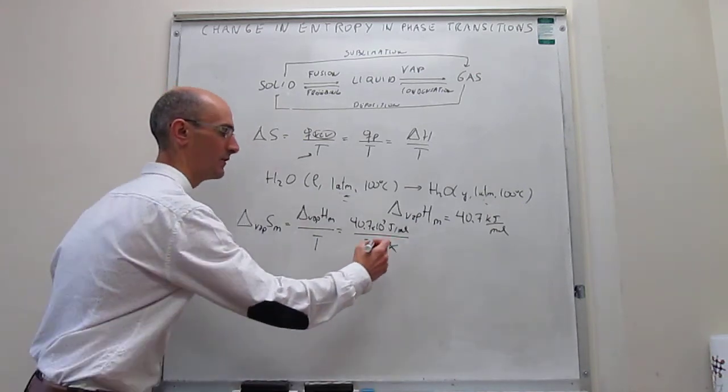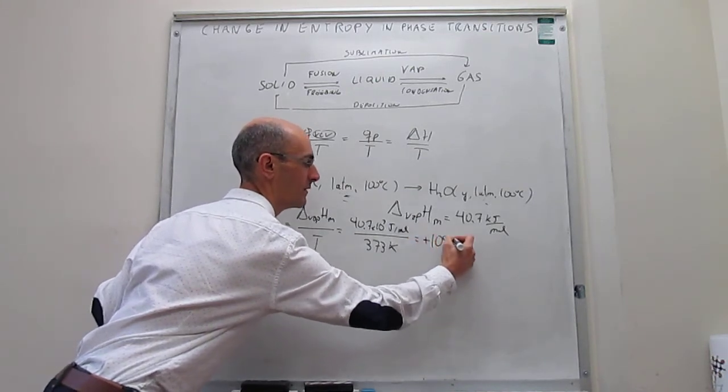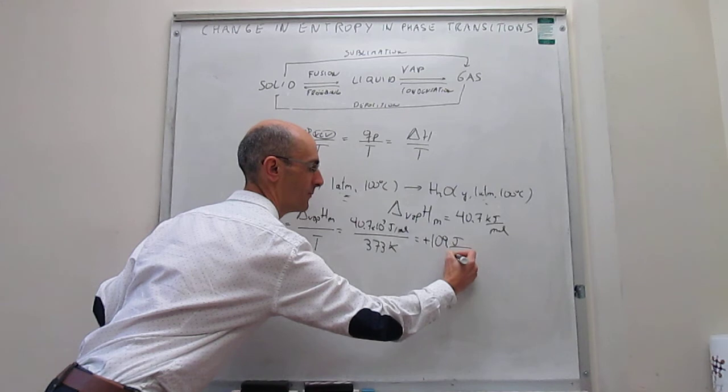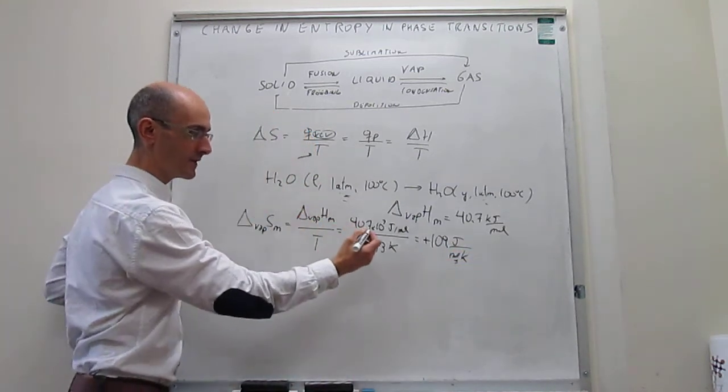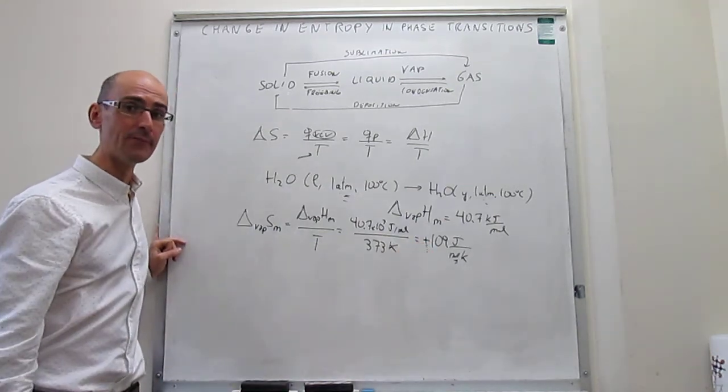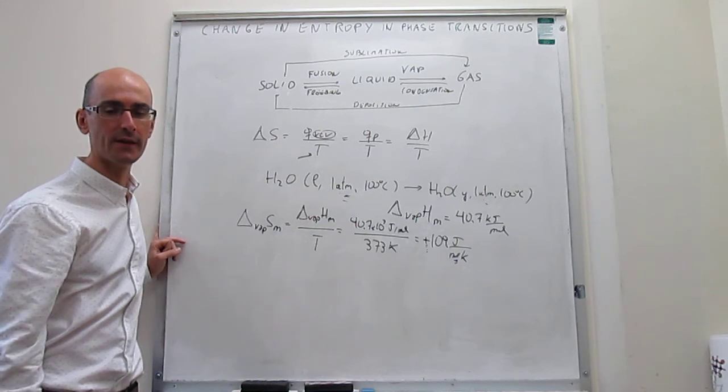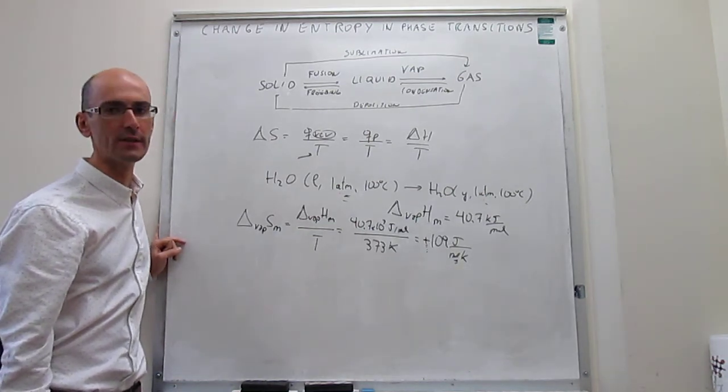So when you do that calculation, this happens to be plus 109 joules per mole kelvin. So it's a molar change in entropy. You get here a positive sign, and that makes perfect sense because we were predicting that a gas should be more entropic than the liquid, as it is clearly more disordered than the liquid.